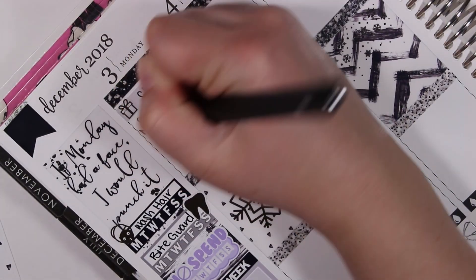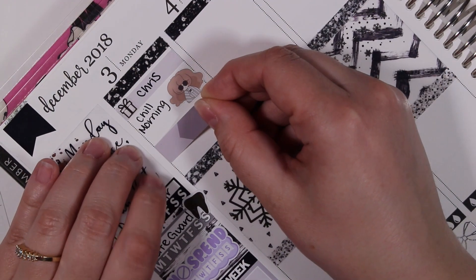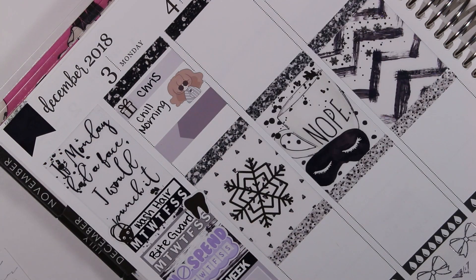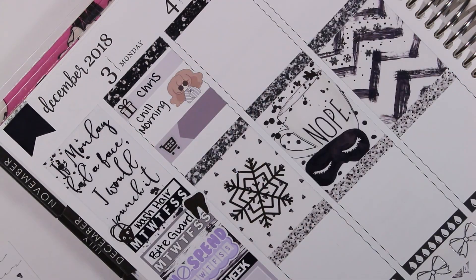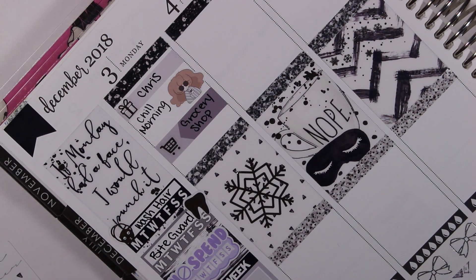Then I took a nope bippity sticker from Glam Planner to mark that I had kind of a chill morning. Then I took an appointment label from the kit and a grocery cart silver foiled sticker from Scribble Prints Co. to mark that I needed to go grocery shopping.